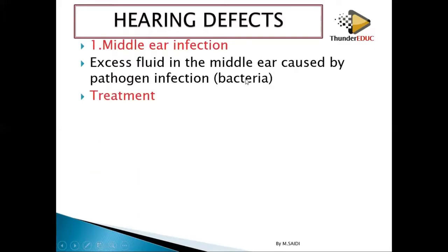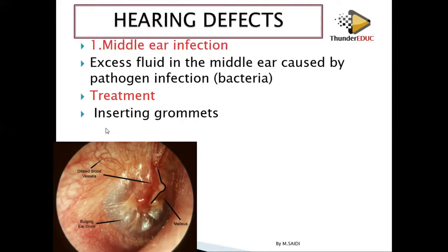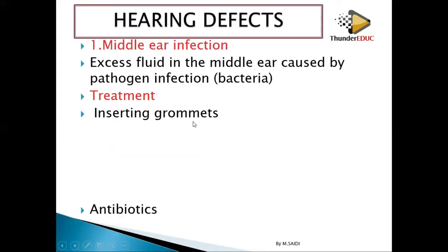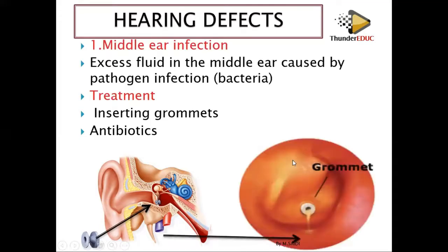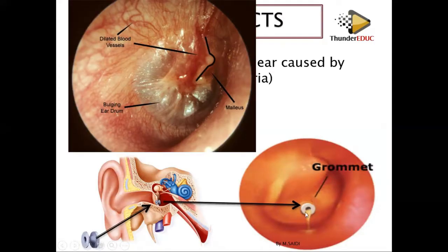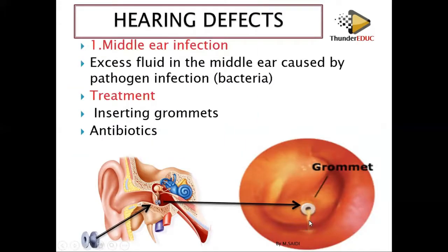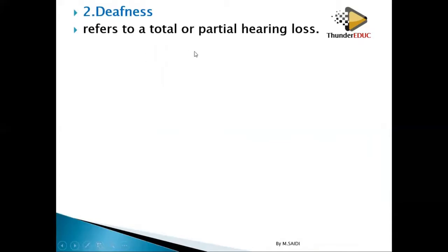To treat middle ear infection: first, because there is fluid that has formed, we need to drain it out, so we insert grommets. Second, we apply antibiotics — antibiotics are for bacteria, so they will kill the bacteria. A grommet is inserted into the tympanic membrane so the fluid can drain out. When you magnify the tympanic membrane you can see how the grommet is placed there and the fluid drains out, allowing the ear to become healthy again.